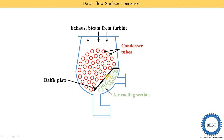Now, from where does the steam enter? Steam enters from the top of the condenser — exhaust steam from the turbine is supplied at the top. The steam passes from outside these tubes, and inside the tubes the cooling water is supplied.